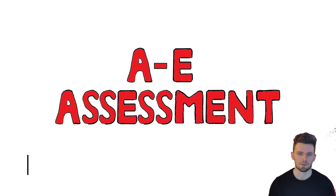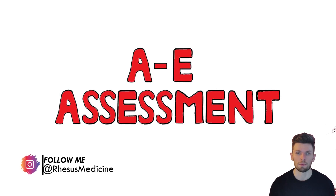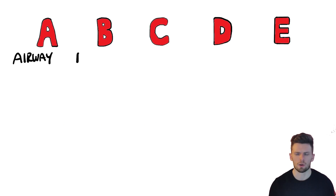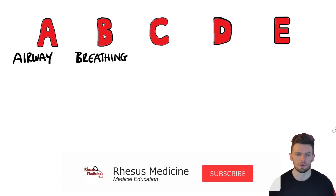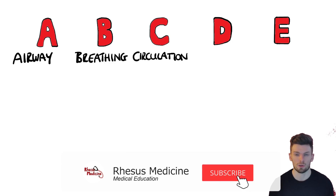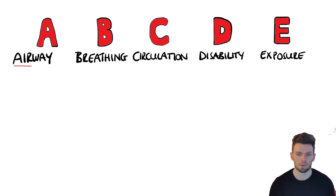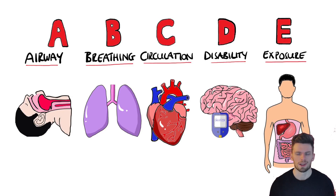The A-to-E assessment is a fundamental tool used to provide a quick assessment for a patient who is critically ill. It follows an order going through the potential life-threatening problems, giving priority to the most severe issues.